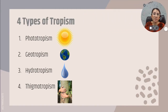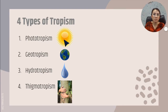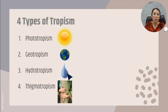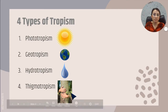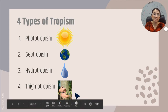We have four types of tropism that we will focus on in seventh grade. The first type is phototropism — this is the plant's response towards light. Geotropism — that is the plant's response to gravity. Hydrotropism — that's the plant's response to water. And thigmotropism — that is the plant's response to touch. Make sure you have those all written down in your notes.